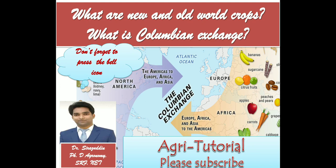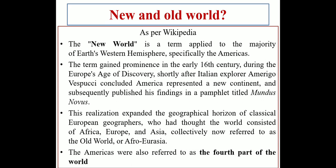First of all we should discuss what new and old world crops are. Before that we should know what is the new world and old world. As per Wikipedia, the new world is a term applied to majority of the earth's western hemisphere. This term gained prominence in the early 16th century during Europe's age of discovery, shortly after Italian explorer Amerigo Vespucci concluded that America represented a new continent and published his findings in a pamphlet titled Mundus Novus.